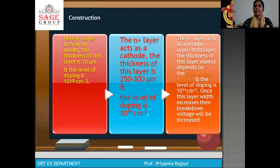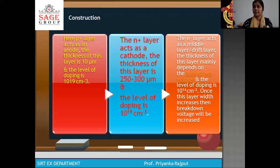The P+ layer acts as the anode; its thickness is 10 µm and the doping level is 10^19 cm^-3. The N+ layer acts as the cathode; its thickness is 250 to 300 µm and the doping level is 10^19 cm^-3. The N- layer acts as the middle layer and is also called the drift layer. Its thickness is directly proportional to the breakdown voltage — whenever the breakdown voltage increases, the thickness also increases.